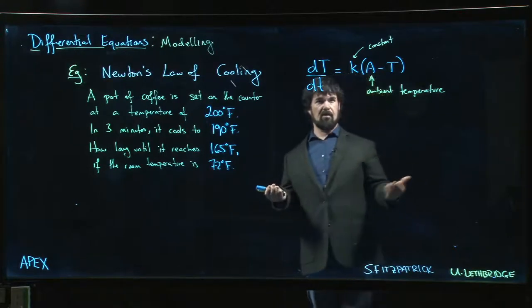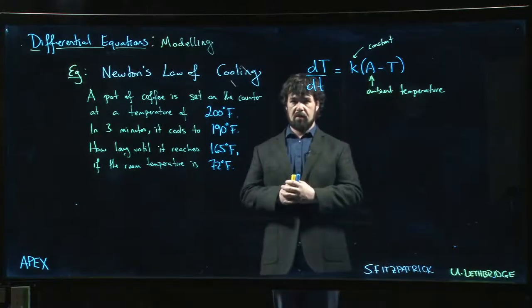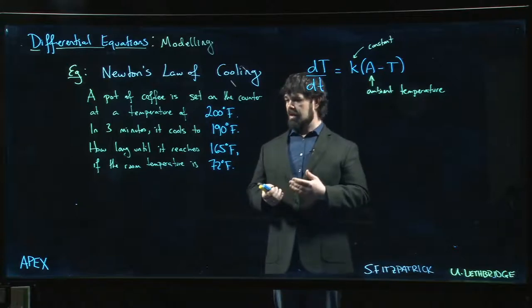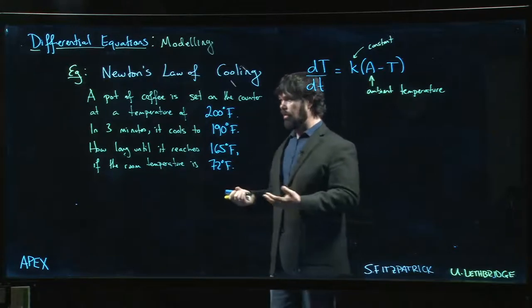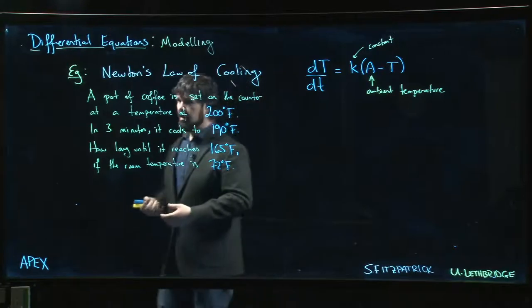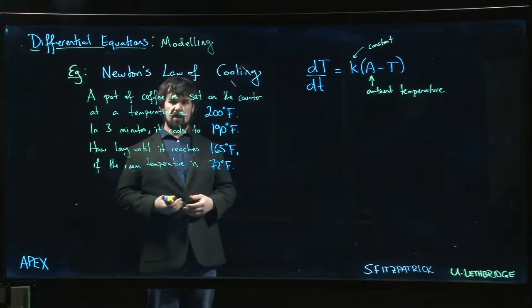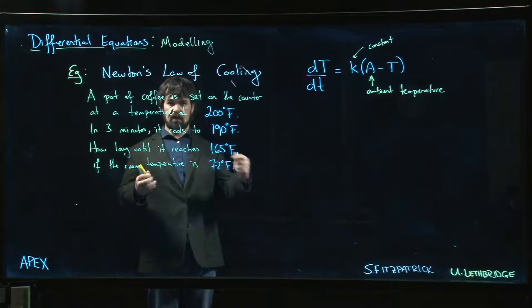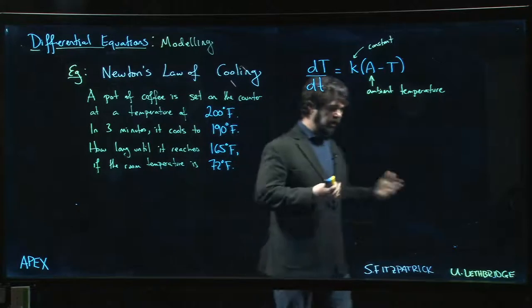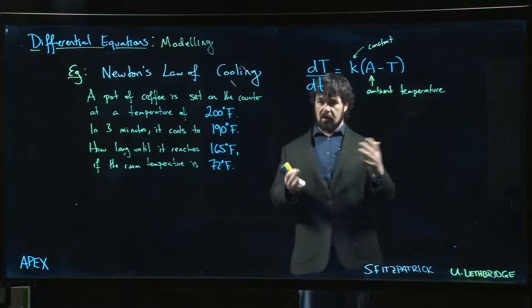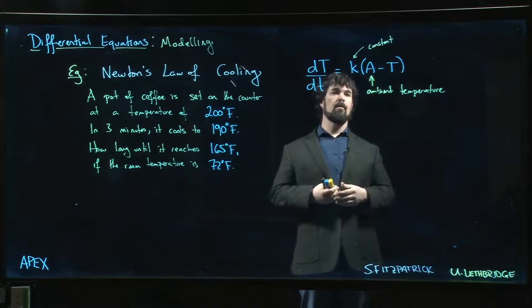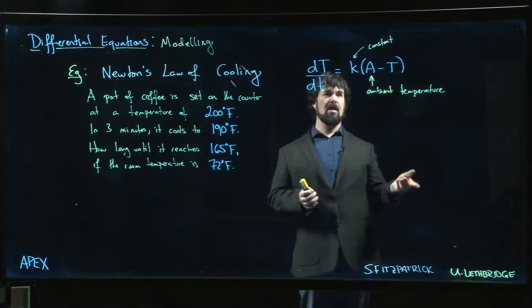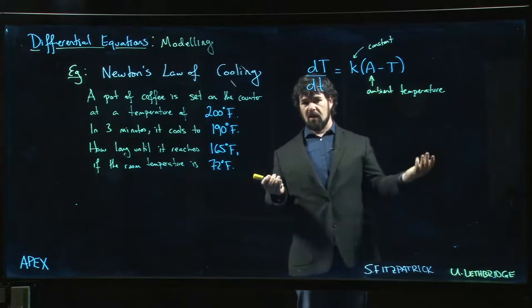The constant k has to be determined experimentally. It's going to depend on a number of factors, things like the surface area of the object, the size of the object. For something like a pot of coffee, a large pot is going to take longer to cool off than a cup. The volume, these sorts of things, they all factor into determining that constant k. Also don't worry if you can't remember the order here, is it A minus T or T minus A. If you get it wrong, it's just going to change the sign of your constant.